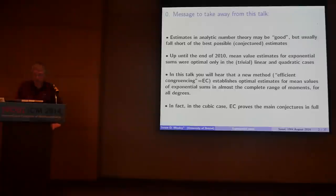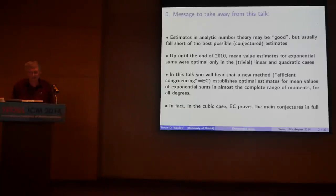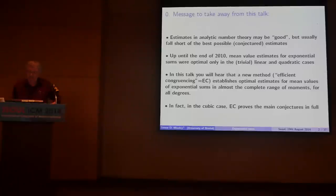Until the end of 2010, really until the start of 2011, this was true of the topic of mean value estimates for exponential sums — except in the trivial linear case and in quadratic cases, where even basic methods give you very close to best possible results. So what you'll hear about is a new method, based on an old method, which establishes either optimal estimates or very nearly optimal estimates throughout the full range for all degrees. In the cubic case, we can actually prove all the conjectures in full — the first time for a degree larger than two that we get best possible results.